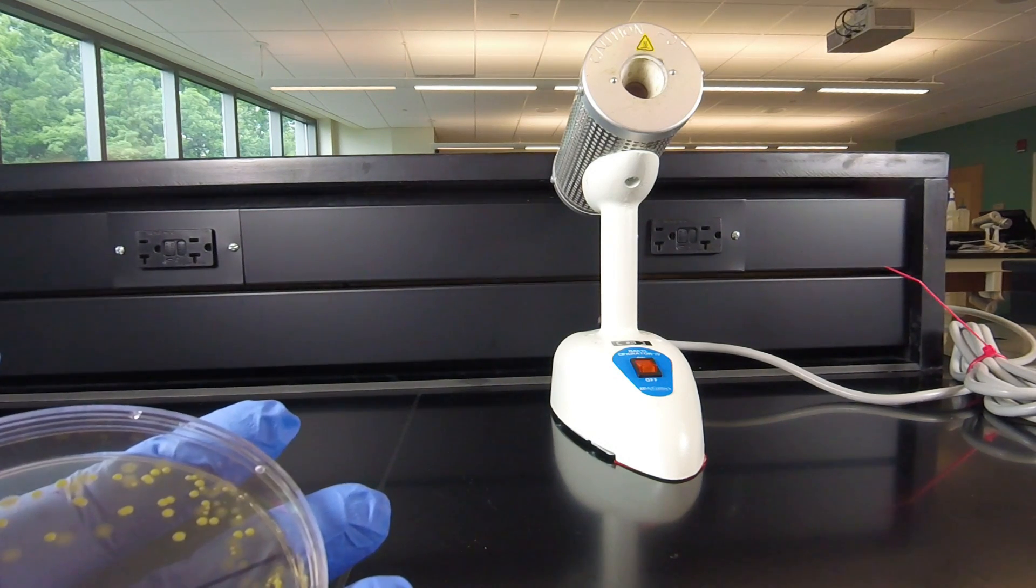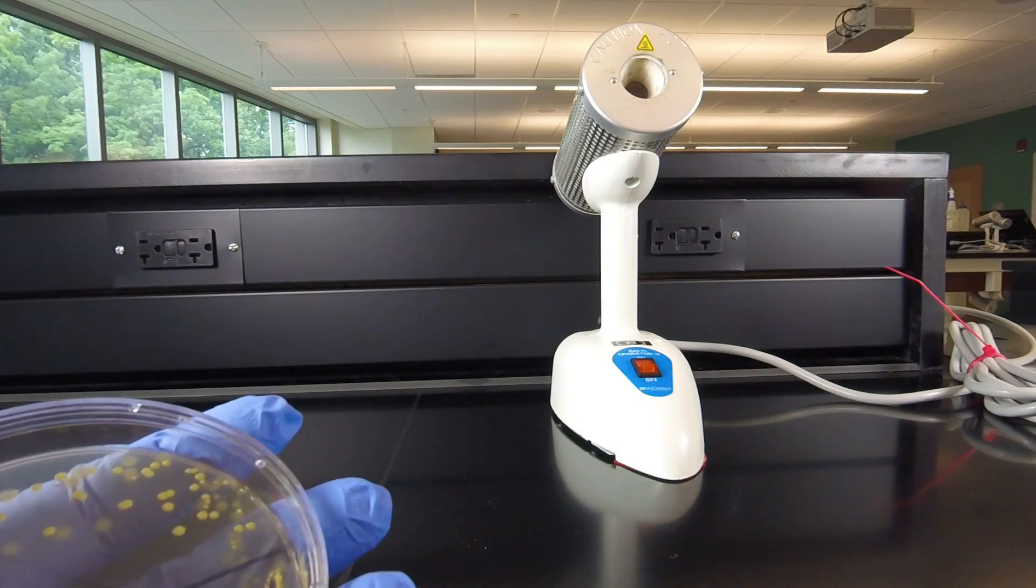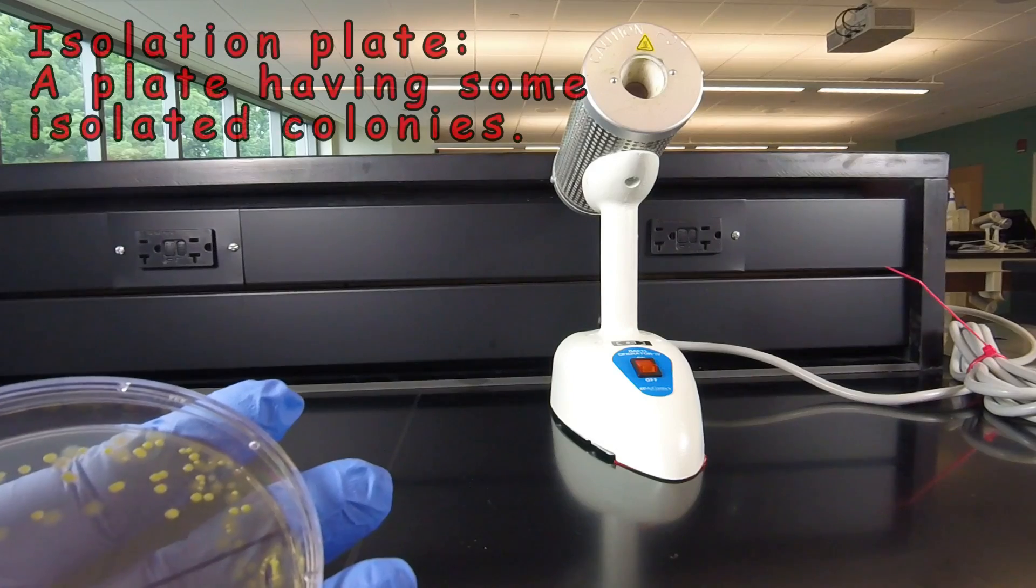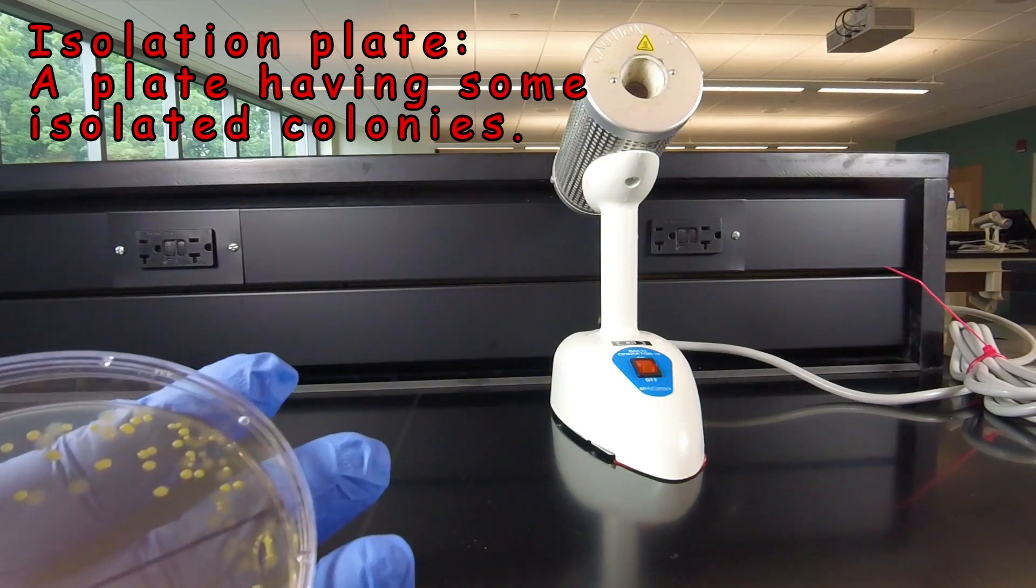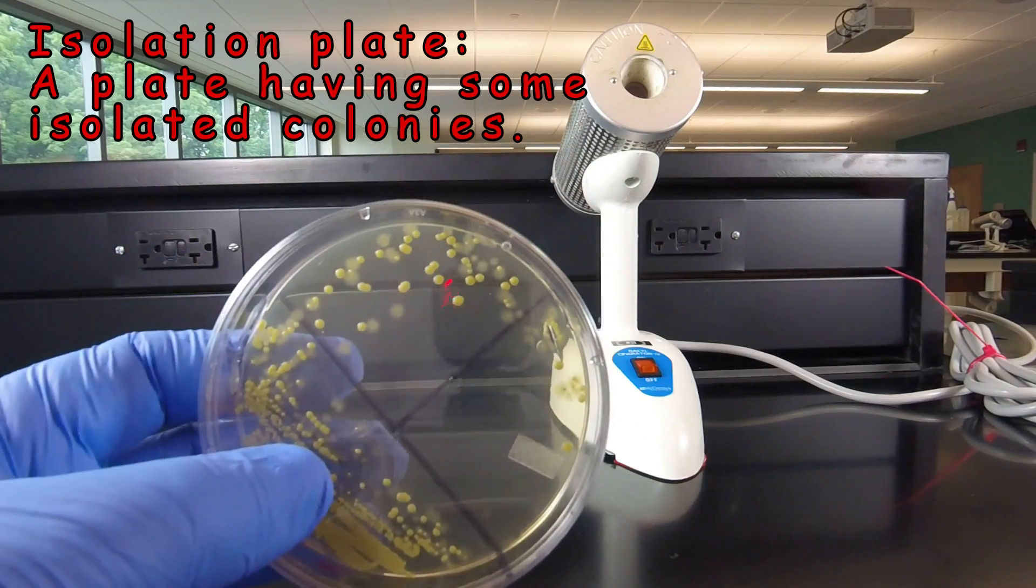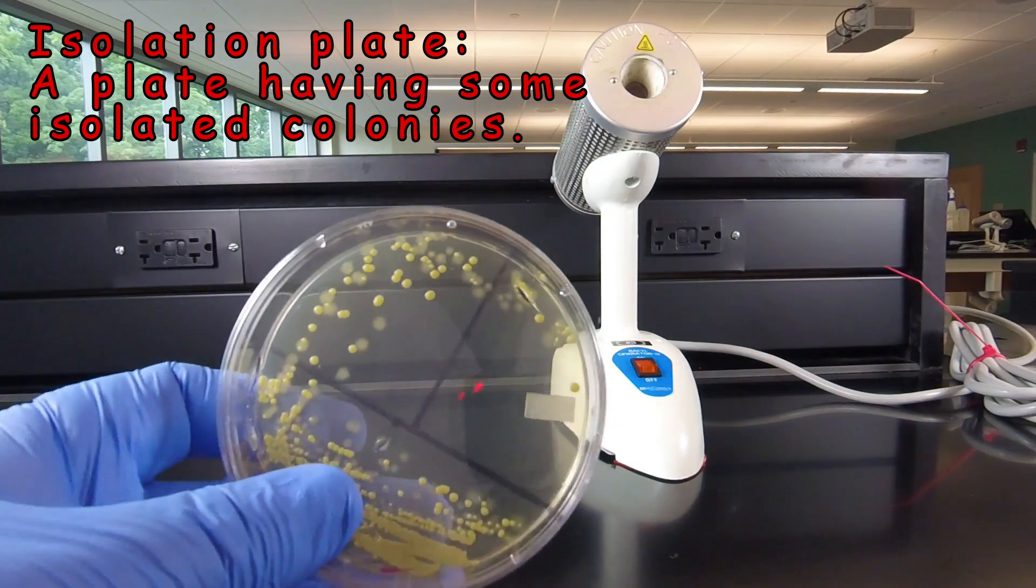In this video lesson, we're going to learn how to get pure cultures from isolated colonies on an isolation plate. An isolation plate is where we streak the petri plate so as to get single isolated colonies, such as this plate right here.